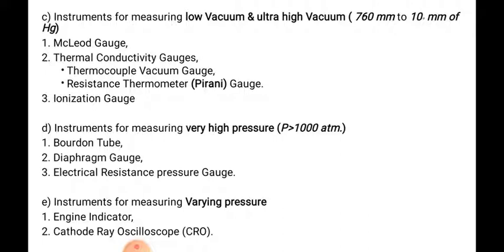For measuring very high pressure — greater than 1000 atmospheres — the Bourdon tube, diaphragm gauge, and electrical resistance pressure gauge are used. For measuring varying pressure, instruments such as the engine indicator and cathode ray oscilloscope (CRO) are used, as varying pressures can be measured by these instruments.